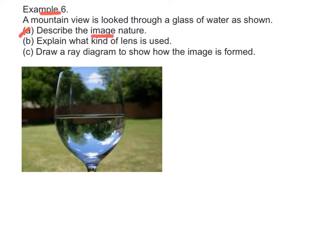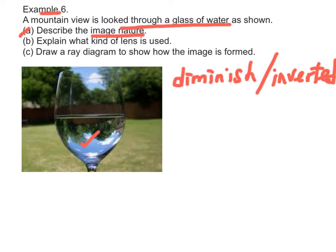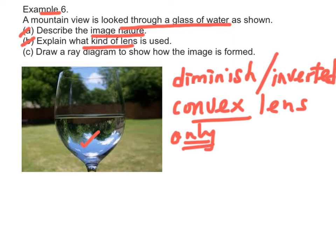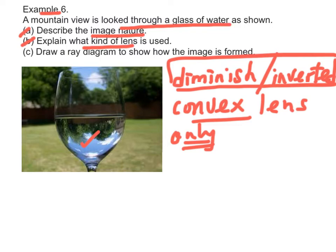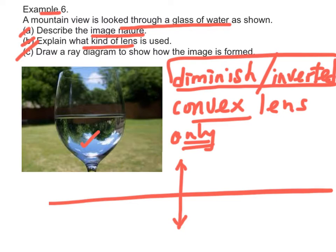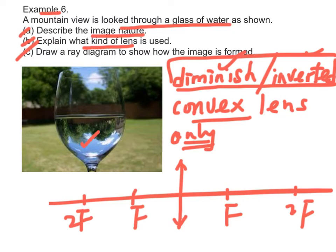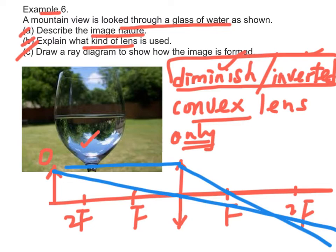Example 6: The image nature when looking through a glass of water is that the image is diminished and inverted. Part B: The lens being used is convex, because only a convex lens will produce a diminished and inverted image. Part C: In order to produce a real, diminished, and inverted image, the object should be placed beyond 2f, and the image lies between f and 2f on the other side.